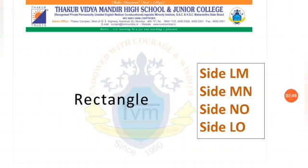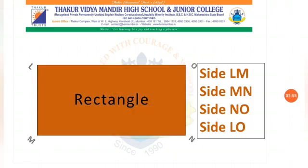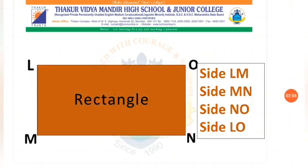This is a rectangle. Let's count how many sides it has. It has four sides and four vertices. The sides' names are side LM, side MN, side NO, and side LO.